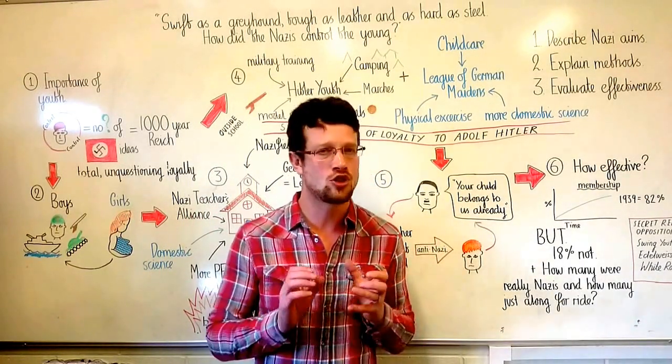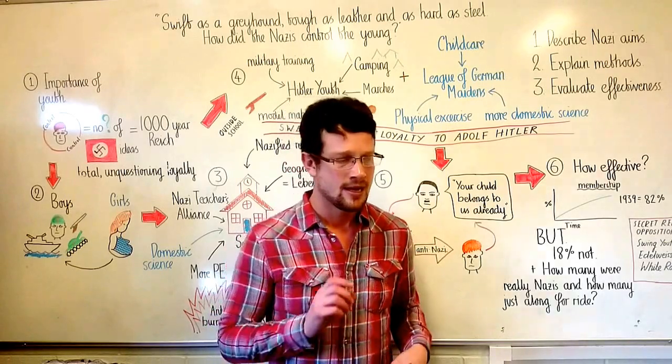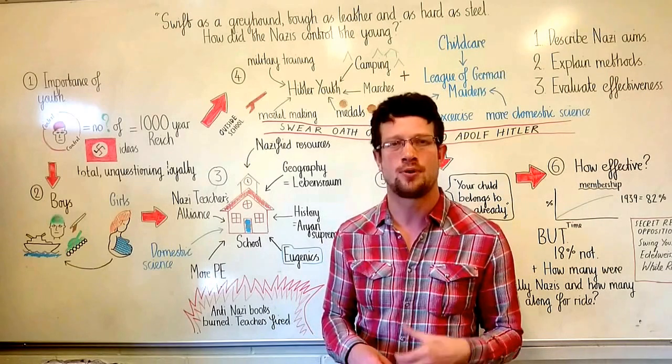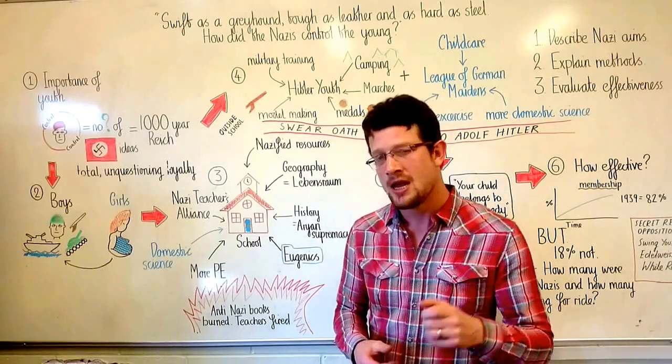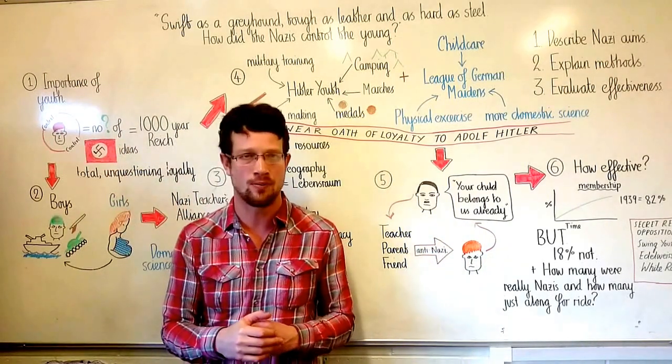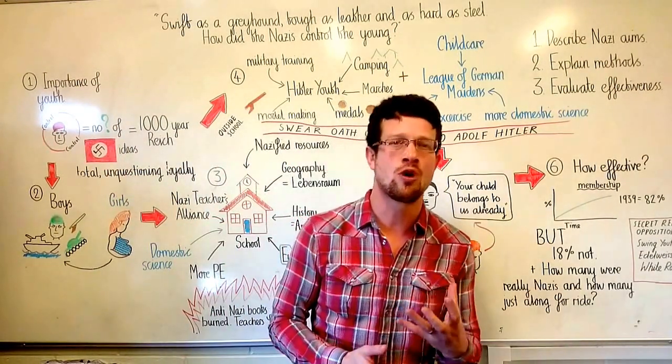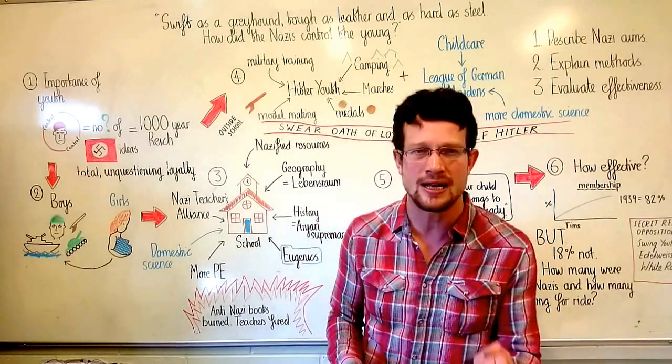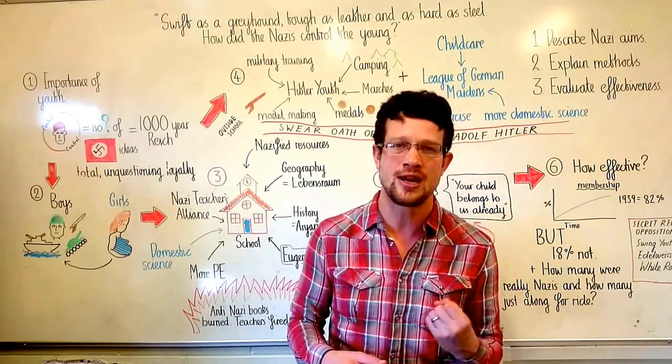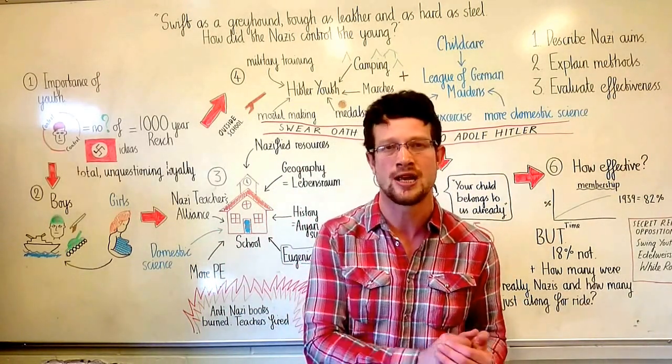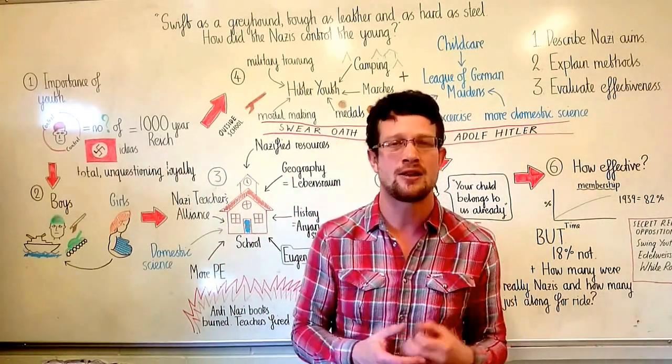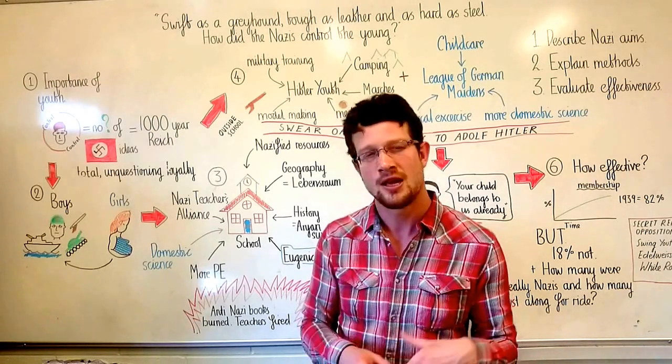Did the Nazis achieve total control over the young? The best place to begin is by acknowledging just how important young people were to the Nazis. The Nazis knew that if they successfully controlled all information getting to their young people, their young people would grow up completely indoctrinated and completely accepting of Nazi ideology. This would mean that when they had children of their own, they would unthinkingly pass Nazi values down through the generations, inadvertently creating a thousand-year Reich, a Germany that would last for a thousand years.